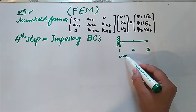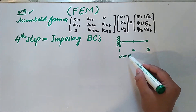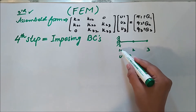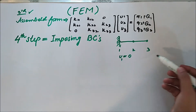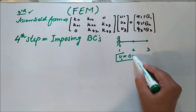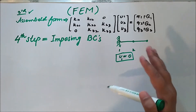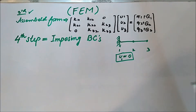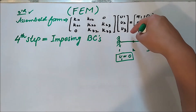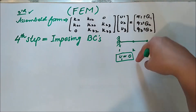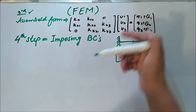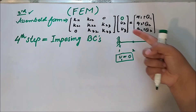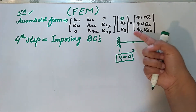U is representing the displacement, so u at node 1 will be equal to zero — and that is the boundary condition we have in this system.